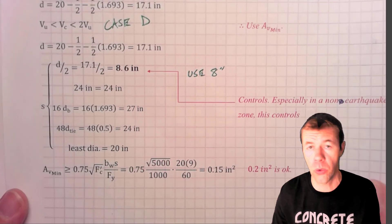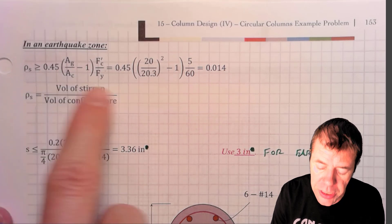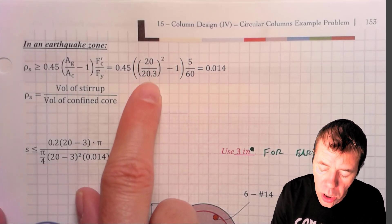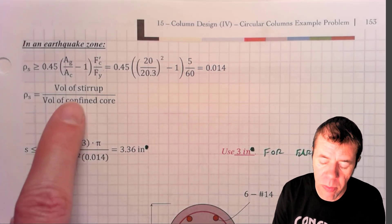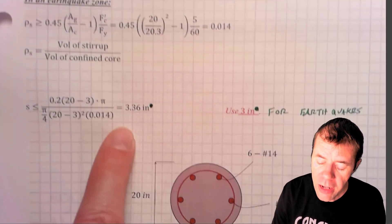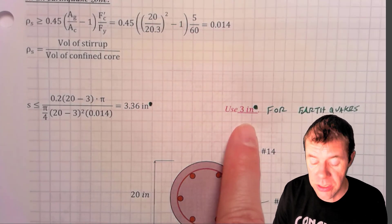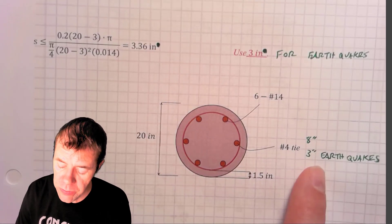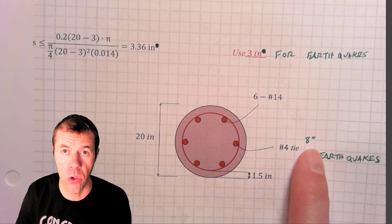When you're in an earthquake zone, you have to provide additional confinement. You have to satisfy this equation. Here, I've plugged in my area gross and my core, and I've solved and figured out my rho sub S is 0.014. Using my volume of my stirrup, dividing my volume of my concrete, and solving for my S, I can plug into this equation here, and find out that I need 3.36 inches. Or, 3 inches is conservative for earthquakes. That's what I would use for earthquakes. 3 inches of tie spacing or spiral spacing, and 8 inches if I'm in a non-earthquake zone.